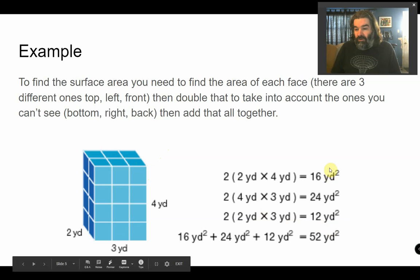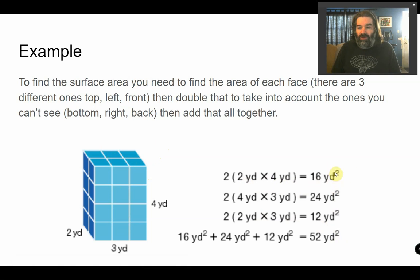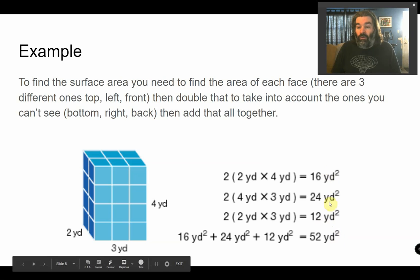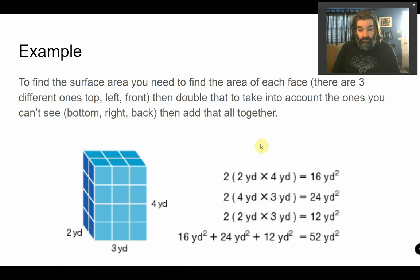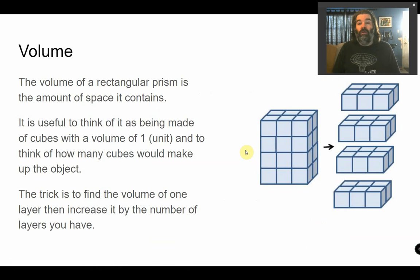By the way, don't worry about this square. The square just means area that you've multiplied it together. Because you multiply yard by yard, you get yard squared. Same with yard cubed. You don't need to square anything. Just ignore that. You don't need to do anything with the number because of the square. That just tells you it's an area.